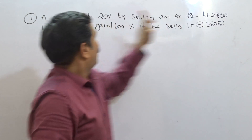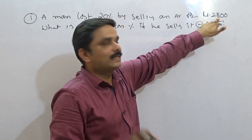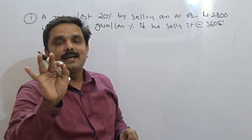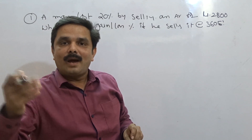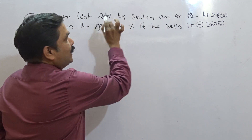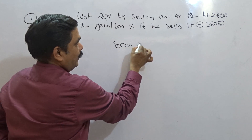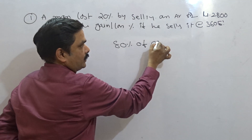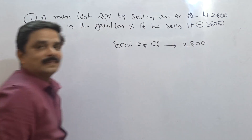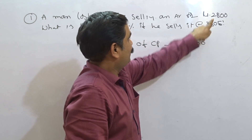This is the selling price and this is the loss percentage. I am going to define the selling price in terms of the cost price by taking cost price as 100%. So, 20% is the loss, meaning 80% of the cost price is 2800 rupees.